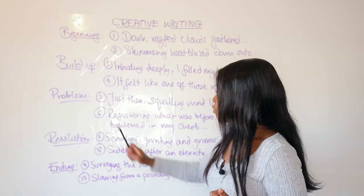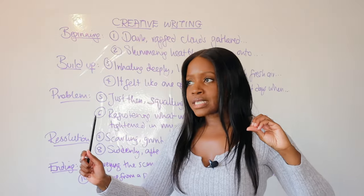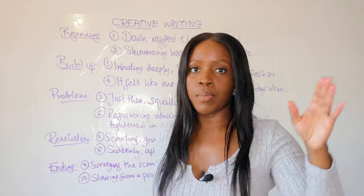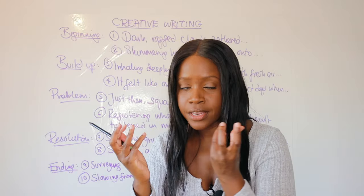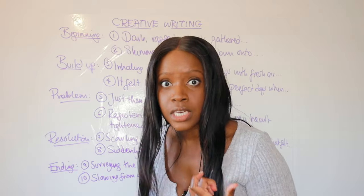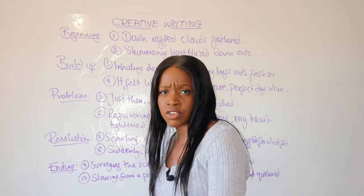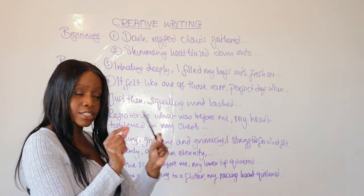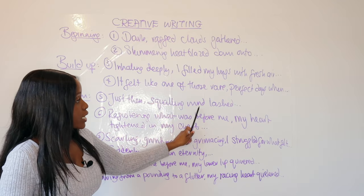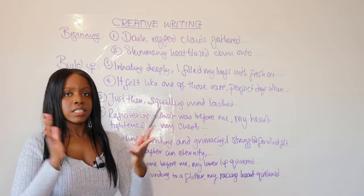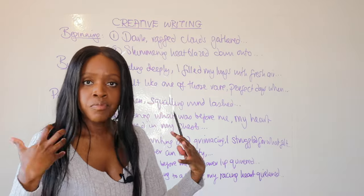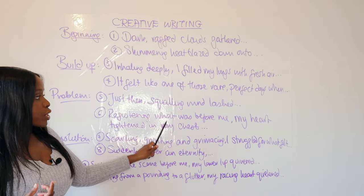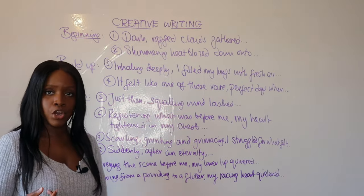In your problem paragraph — paragraph number three — instead of switching in an obvious way like 'suddenly I saw this dark figure,' use weather as an interesting thread. Use weather to suddenly shift the tone. In your build-up you had a sense of promise and hope, and now you shock your reader by saying 'Just then, squalling wind lashed across me' — 'squalling' means like shouting, which is a nice onomatopoeia. Also, in your problem paragraph you could describe: 'Registering what was before me, my heart tightened in my chest.'